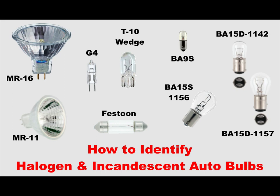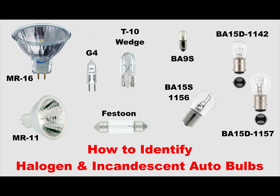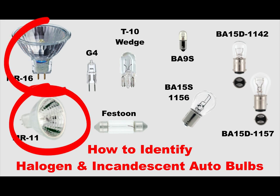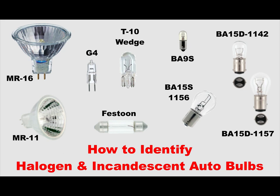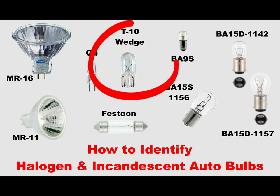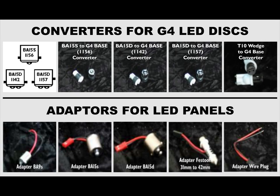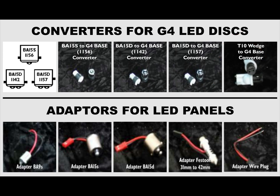Most halogen downlights use bulbs like this and can be directly converted with many of the G4 LED discs from our range. Some fittings use MR11s or MR16 glass bulbs — we also stock replacements for these with multi-volt LED globes. Fittings that use the T10 type wedge bulb can easily be converted using our T10 to G4 converter with any G4 disc from our range. As an added bonus, all of our converters allow the angle of light to be adjusted slightly, enabling you to direct the light to where it's needed most.